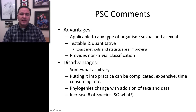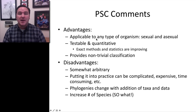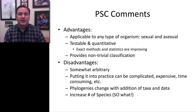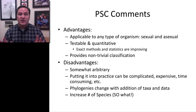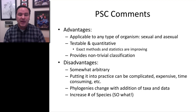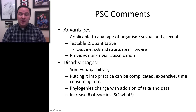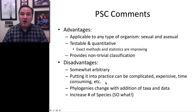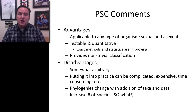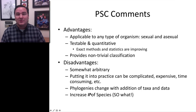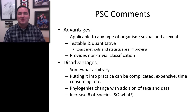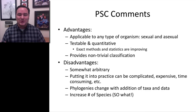The advantages of the phylogenetic species concept are that it's applicable to any type of organism — sexual, asexual, living, or fossil. Morphology can even be incorporated. It's very testable and quantitative, and the tree itself provides a useful classification. Disadvantages are that it's still somewhat arbitrary, can be expensive and time-consuming to implement, and phylogenies can change as more data or taxa are added. It also tends to increase the number of recognized species — but that's not necessarily a problem.